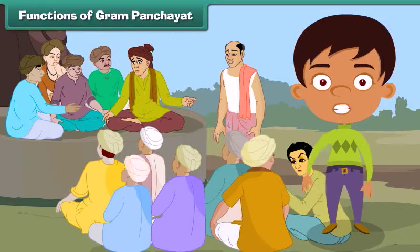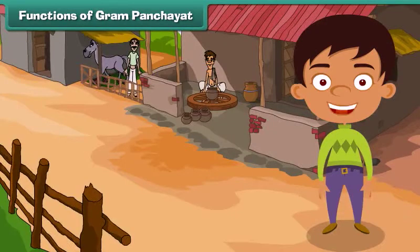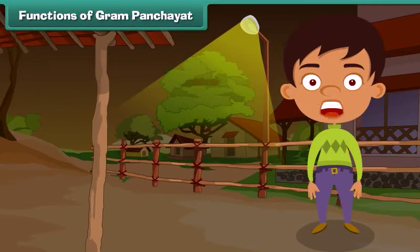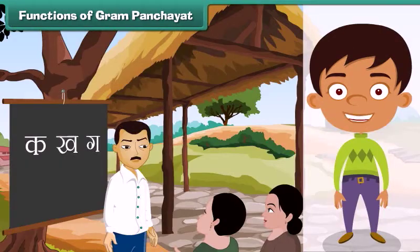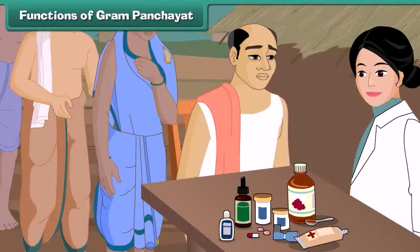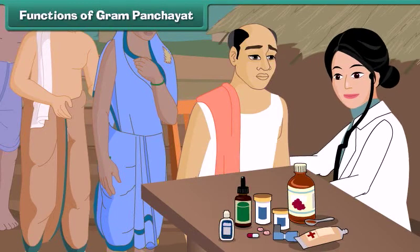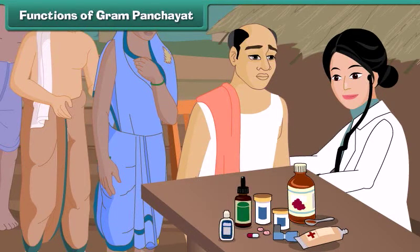Functions of the gram panchayat: The gram panchayat looks after the cleanliness of the village. It also takes care of the water supply to the village. It maintains roads, streets, and proper lighting in the village. It makes arrangements for the education of children and adults of the village.